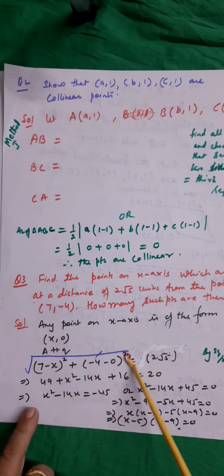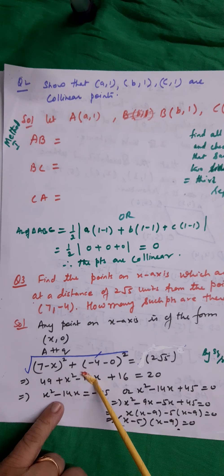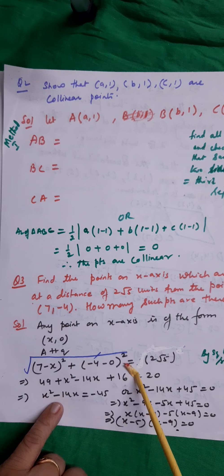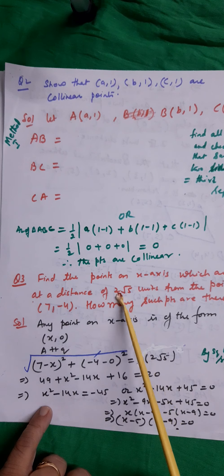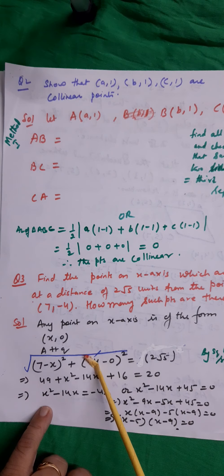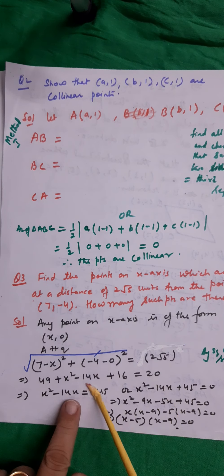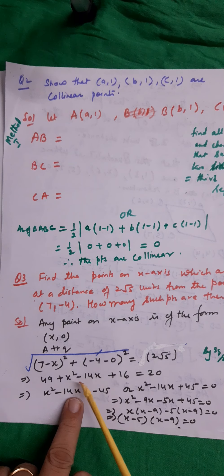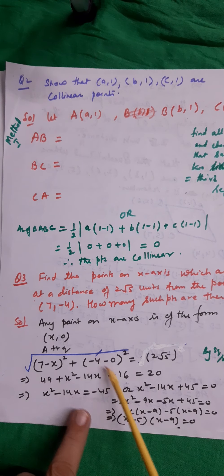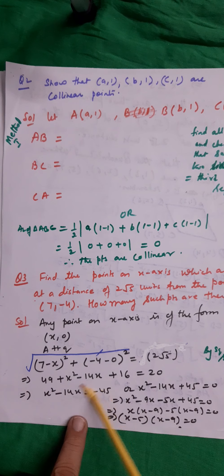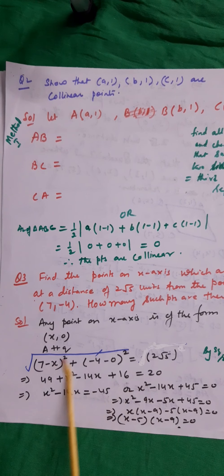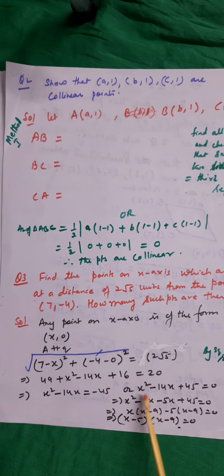Any point on the x-axis is of the form (x, 0). The distance of this point from (7, −4) can be written as √[(7−x)² + (−4−0)²] = 2√5. To get rid of the root sign, we square both sides, giving 20 = 49 + x² − 14x + 16, which implies x² − 14x + 45 = 0.